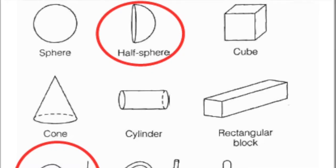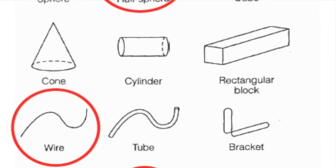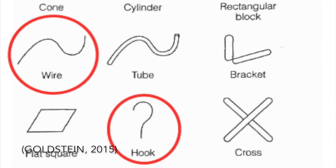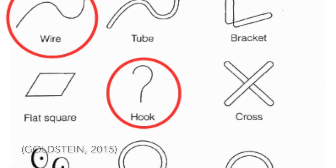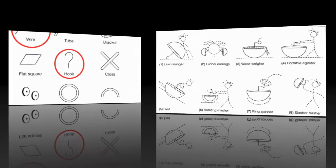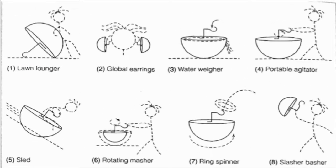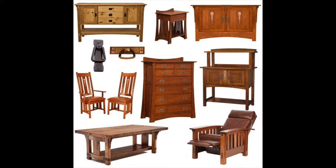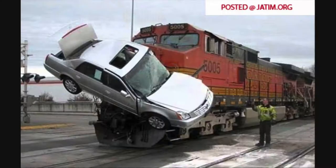Ronald Fink developed the technique of creative cognition by having participants randomly select three objects and gave them one minute to create a new and interesting looking object from them. After this, they were given the name of a category, such as furniture, appliances, transportation, etc.